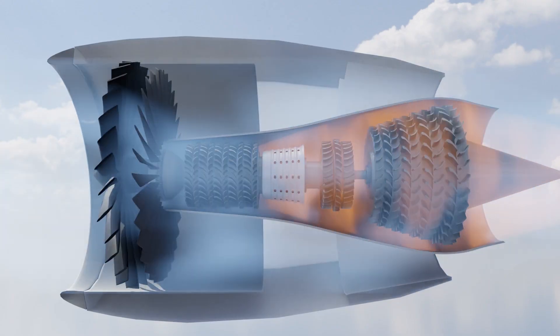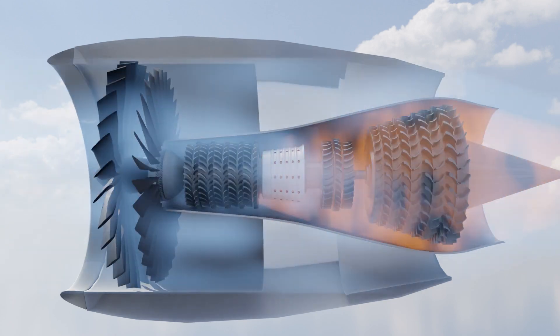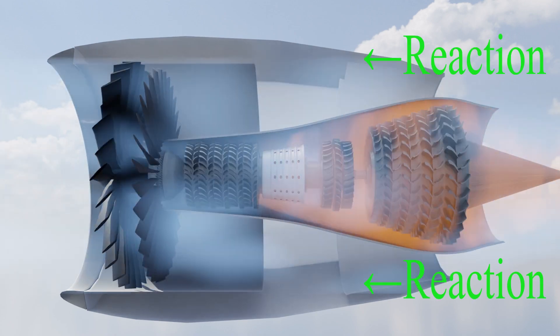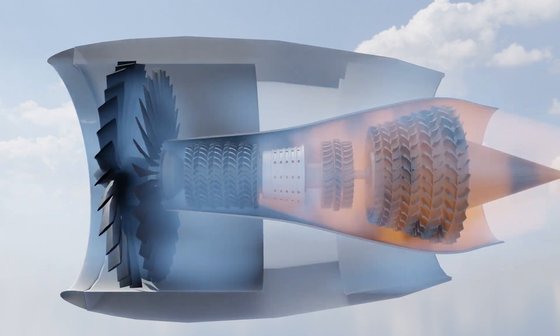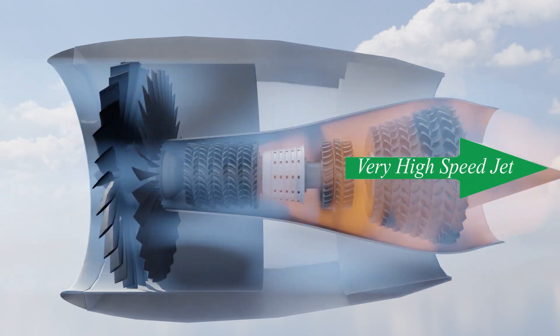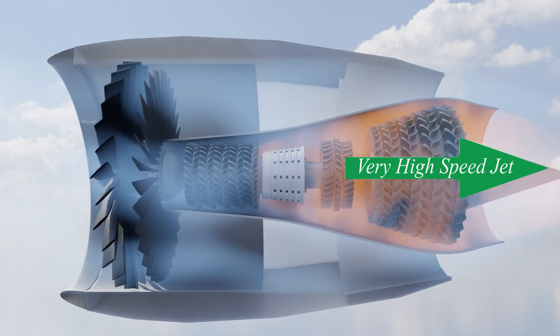A jet engine works on a basic principle, Newton's third law of motion. The reaction force produced by the jet engine helps the aircraft to move. In simple words, the working of the jet is producing a high-speed jet at the end of the engine which will counter the drag produced on the aircraft and help to move forward.